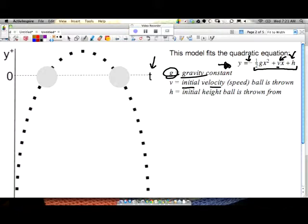It's the initial velocity. And velocity is just a fancy way of saying speed. But velocity actually has attached to it which direction you're going. So positive would be up and negative would be down. And then we look at the initial height that the ball is thrown from.